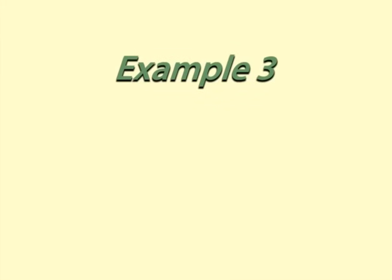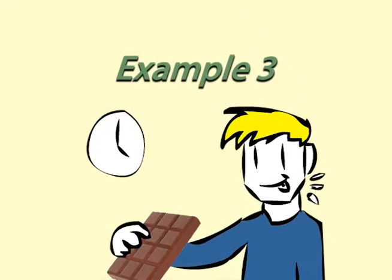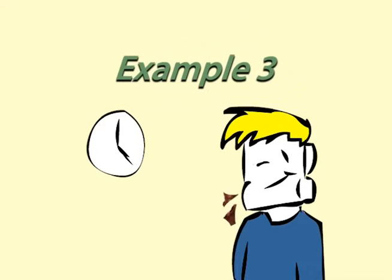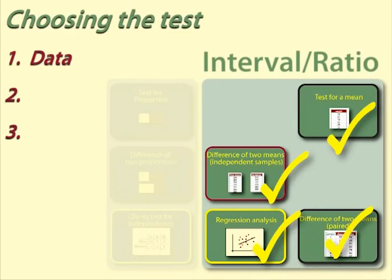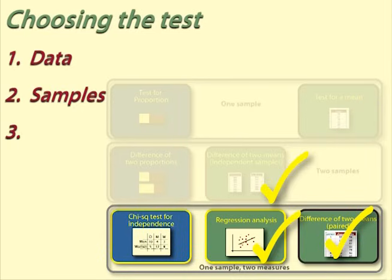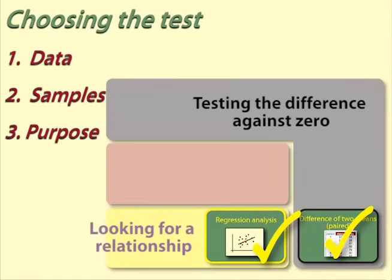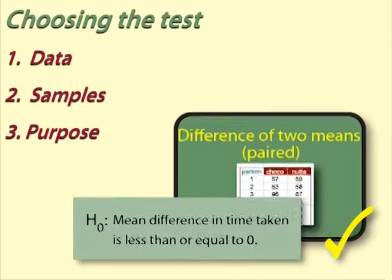Example 3: Bar longevity compared with nutter bars. Helen thinks her choconutties last longer than the competition's nutter bars. She gets 36 people to eat one of each and records their eating times. Data: Helen collects times in seconds, so this is interval ratio data. Samples: there is one sample of 36 people, but with two scores for each person — the time for the choconutty and the time for the nutter bar. Purpose: she is looking at whether there is a difference in time taken for each bar. Thus, the test is difference of two means paired sample.